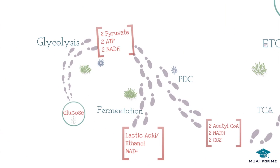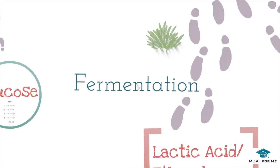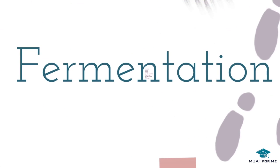Once we have pyruvate, we reach a fork in the road — we have to decide: do we undergo fermentation or PDC? This depends on whether or not there's a final electron acceptor, which for humans is oxygen. So we look at whether there's oxygen or a lack of oxygen.